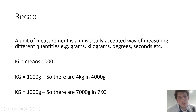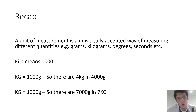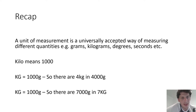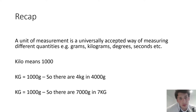So what is a unit of measurement? A unit of measurement is a universally accepted way of measuring different quantities. Examples of units of measurement are grams, kilograms, degrees, and seconds, amongst many others. The next question was, what does kilo mean? Kilo means 1,000.